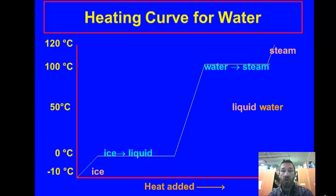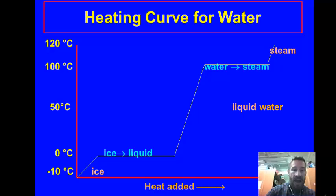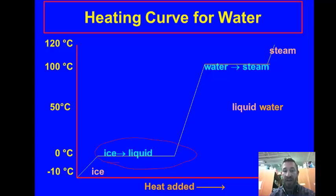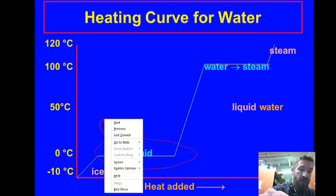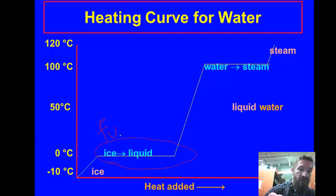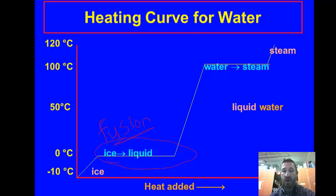This is what a heating curve looks like for water. We're taking water at negative 10 degrees Celsius, starting from solid ice. We see this process going from ice to liquid — that is melting. Another word for melting, which we learned in lab, is fusion. F-U-S-I-O-N. Fusion is another word for melting.